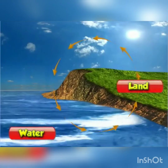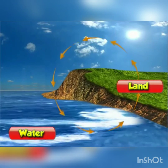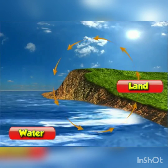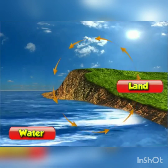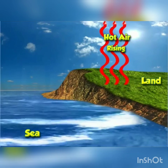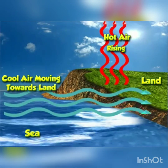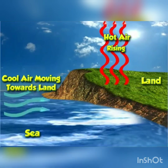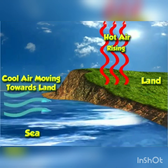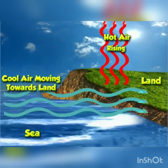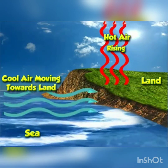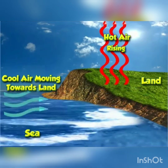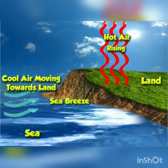Differential heating and cooling of land and water surfaces has a great influence on the weather of a place. At the same time, cool air which is above the sea moves towards the land to take the place of the warmer air that has risen. Thus, wind blows from the sea towards land. This wind is cool and pleasant and is called sea breeze.